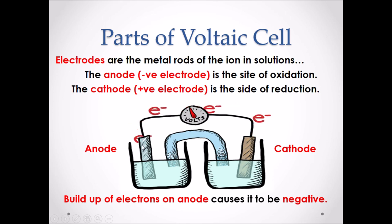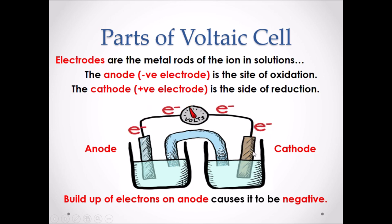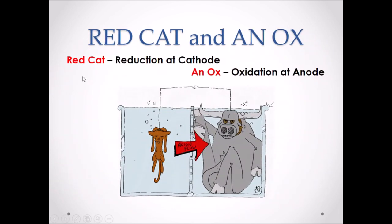All electrons are negative and will repel other negative forces. Eventually, those electrons will repel and travel to the more positive electrode, which is the cathode. To remember which half reaction occurs at each electrode, you can use the mnemonics 'Red Cat' and 'An Ox.' Red Cat refers to reduction at the cathode, and An Ox refers to oxidation at the anode. The ox undergoes oxidation, losing electrons which travel through the external wire to the cat — the cathode — which gains the electrons, going through reduction.